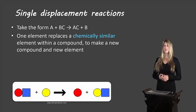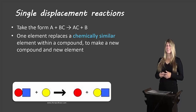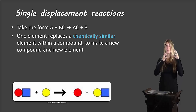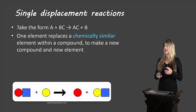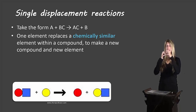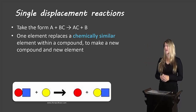Let's start off with our single displacement reactions. They take the form A, a single element, plus BC, a compound, to give you AC, a new compound, plus B, a new element by itself. If you notice from that reaction, A has taken the place of B. It used to be B that was attached to C and A was all alone by itself. A has kicked B out of its place, so A is now bonded with C and B is all alone by itself.